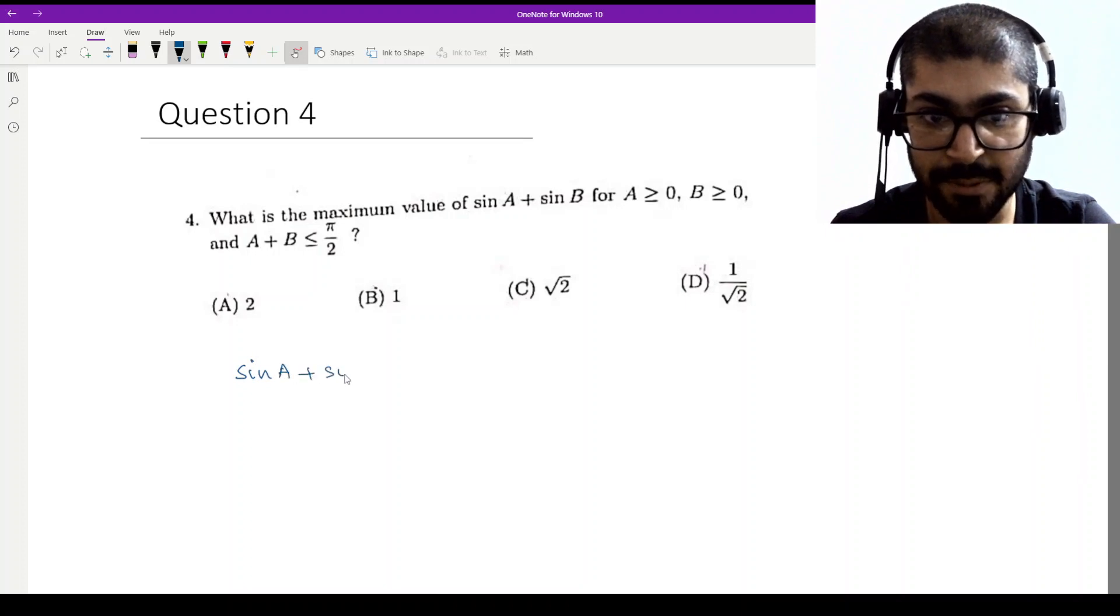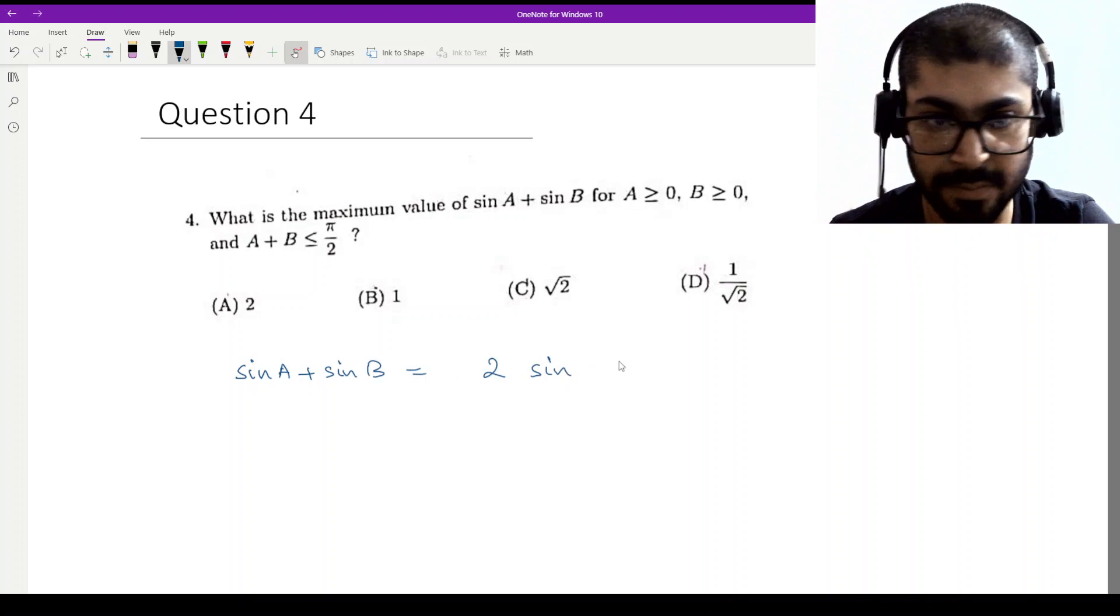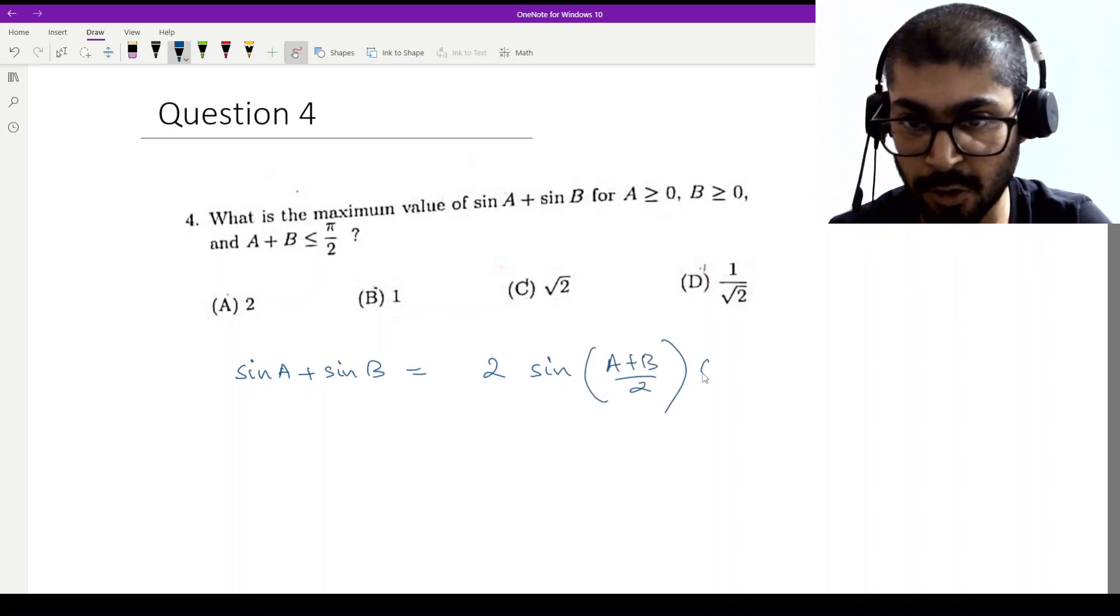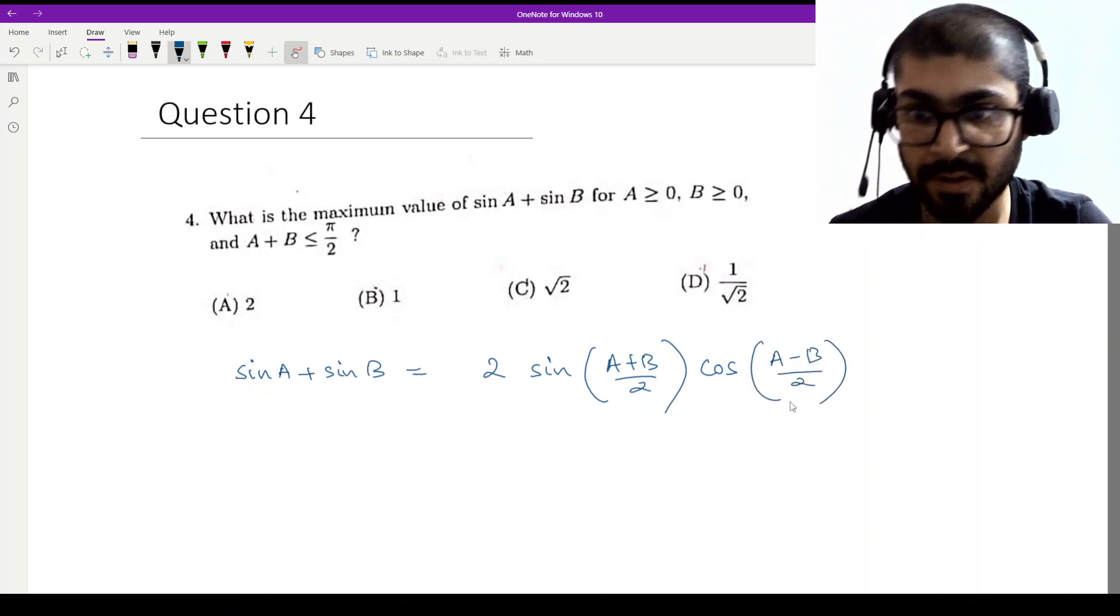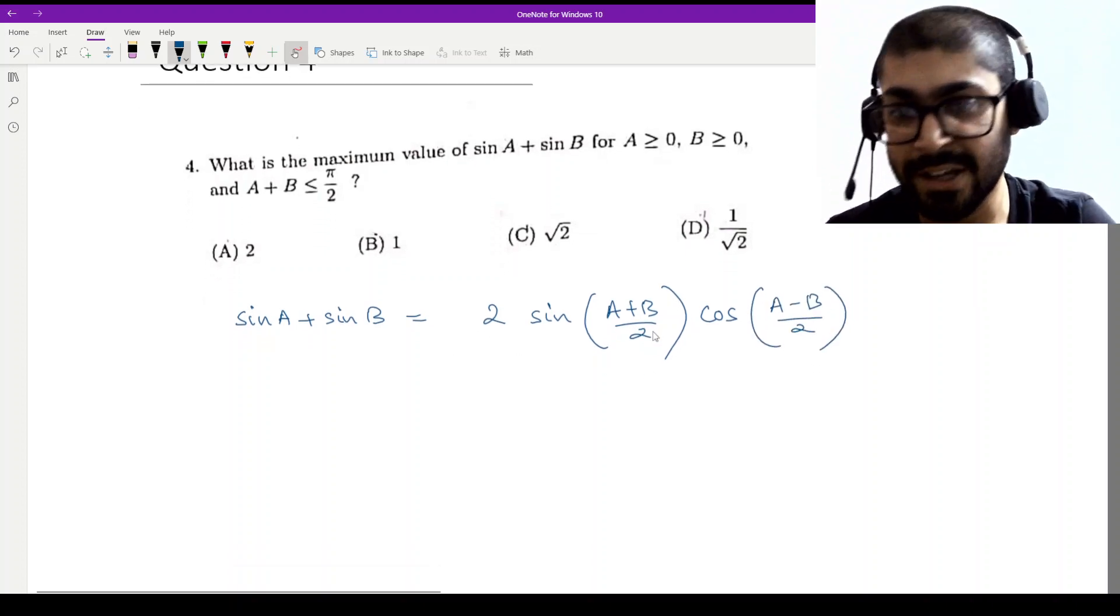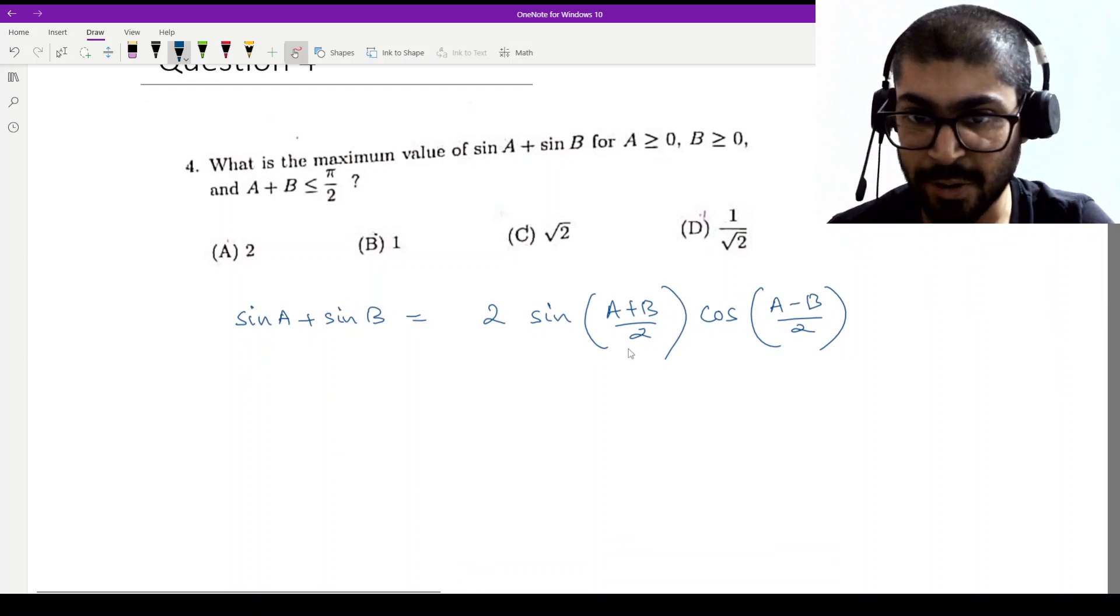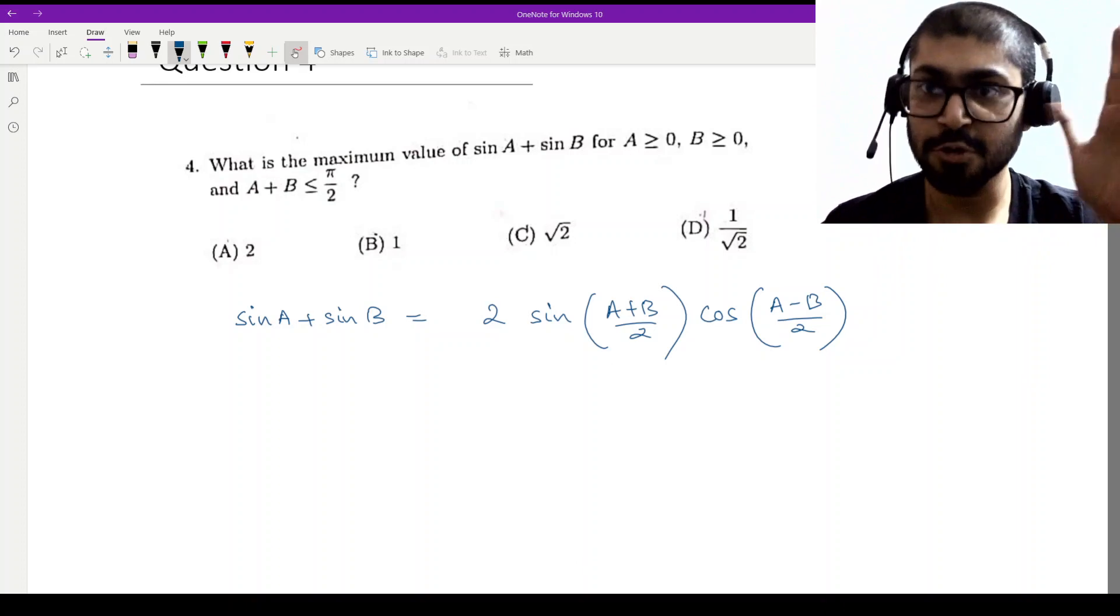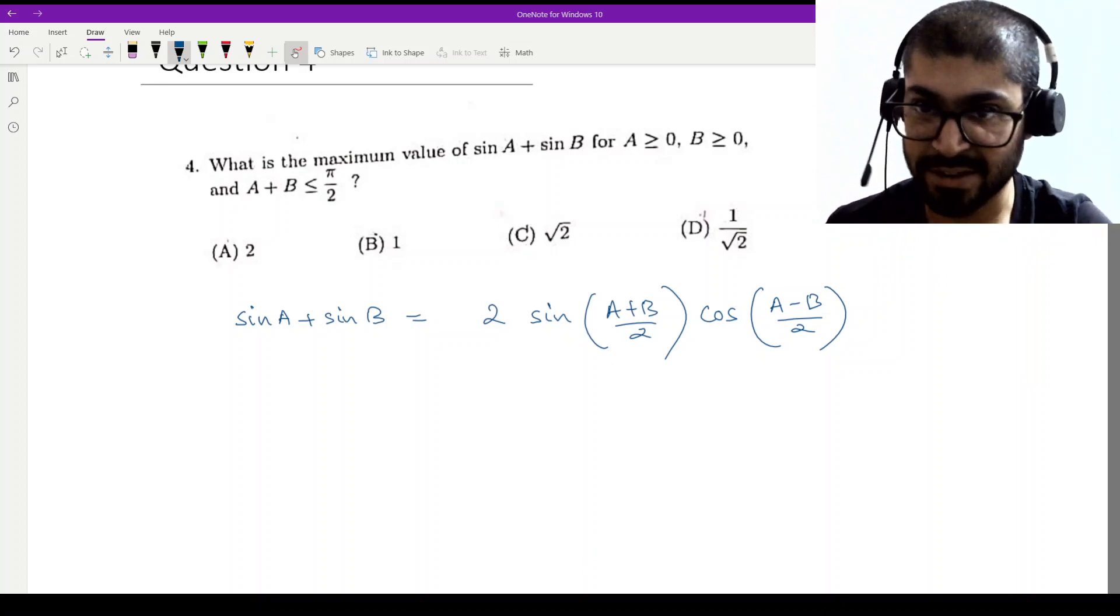So sin A plus sin B equals 2 sin (A plus B by 2) cos (A minus B by 2). Right? Here we have sin (A plus B by 2). So A plus B is less than pi by 2. Now you can think that 0 to pi by 2, sin is an increasing function.